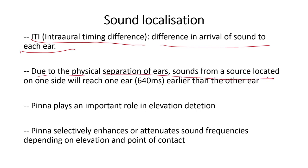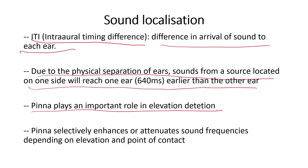Due to the physical separation of the ears, sound from a source on one side will reach one ear about 640 microseconds earlier than the other. The pinna plays an important role in elevation detection — determining whether a sound is above or below you. Its satellite-dish-like structure selectively enhances or attenuates sound frequencies depending on elevation and point of contact, and these cues are perceived by the primary auditory cortex as elevation.